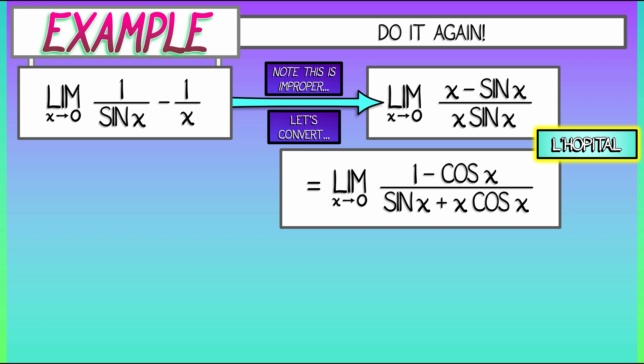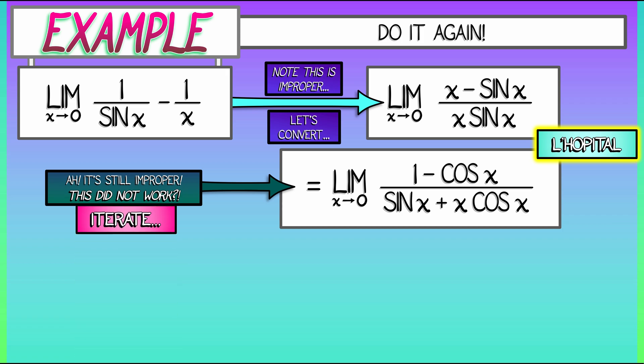Now, all we have to do is evaluate and get the answer. But that's not going to work so well because when I try to evaluate this, I get zero in the numerator and zero in the denominator. L'Hopital's rule failed. What are we going to do? Well, what we're going to do is consider this again as an improper limit and try to apply L'Hopital's rule again. Iterate that.